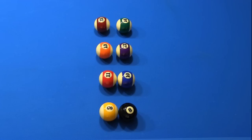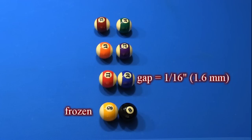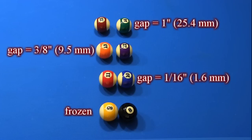Here are a collection of shots I have set up for demonstrations of important effects. The 8 and 9 are frozen, the 10 and 11 are about 1/16th of an inch apart, the 12 and 13 are about 3/8ths of an inch apart, and the 14 and 15 are almost 1 inch apart.